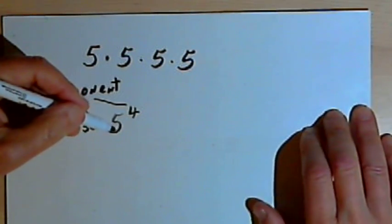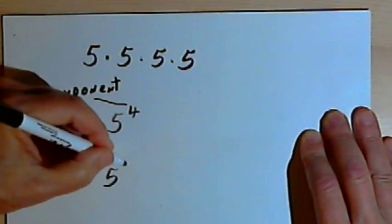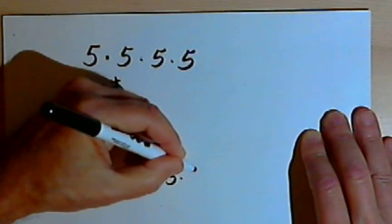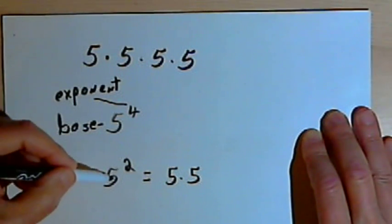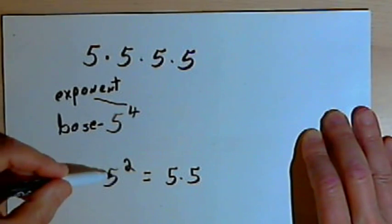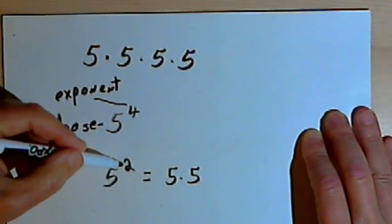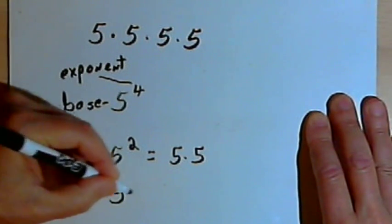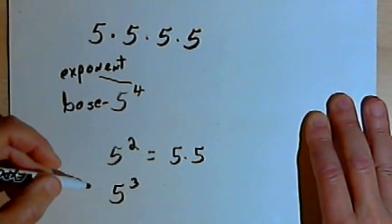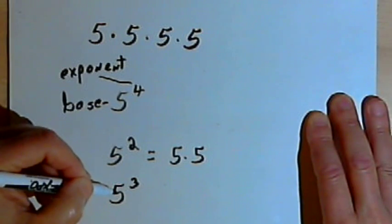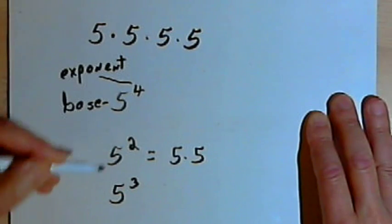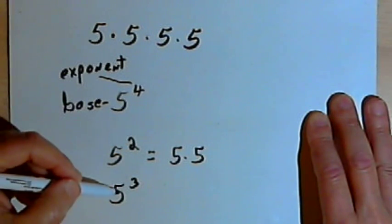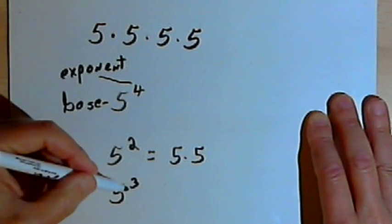If we're multiplying something by itself two times — so 5 raised to the second power, which is 5 times 5 — you may also hear people call this "5 squared." When the exponent is a 2, people may just use the term "squared" instead of saying "5 to the 2nd." If the exponent is a 3, like 5 to the 3rd power, people may say "5 cubed" instead of "5 to the 3rd."